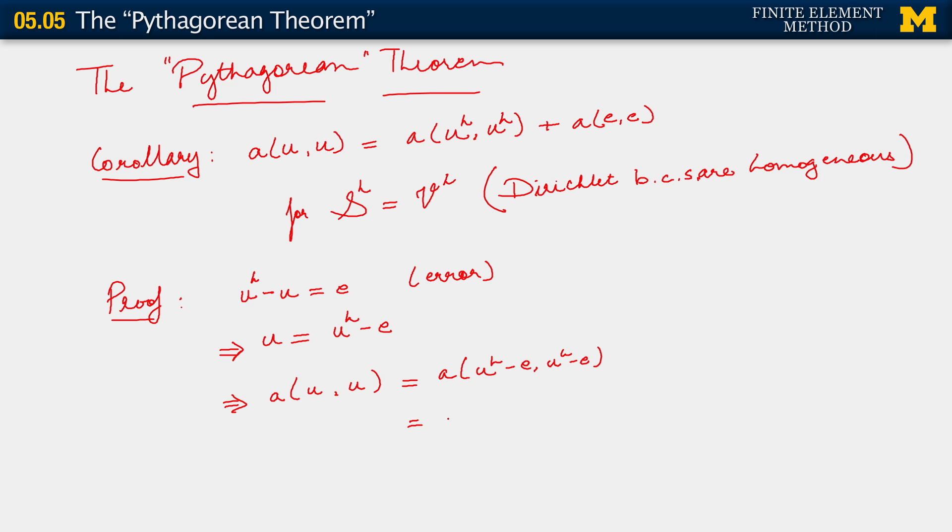Therefore, when we consider on the left hand side the energy norm of the exact solution, we see, of course, this. But now, just as we did in the previous segment, we can expand out the term on the right hand side by just using the fact of bilinearity. And this gives us a(u_h, u_h) minus a(e, u_h) plus a(e, e).